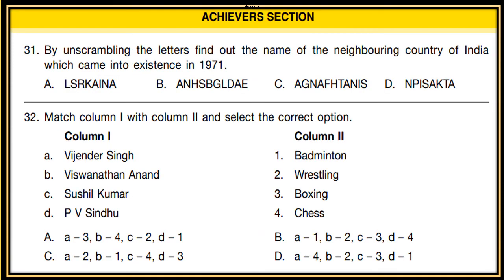Achiever Section — this section has more weightage than any other section, so be prepared well. Question 31: By unscrambling the letters, find out the name of the neighboring country of India which came into existence in 1971. Unscramble the letters and find out the country's name.